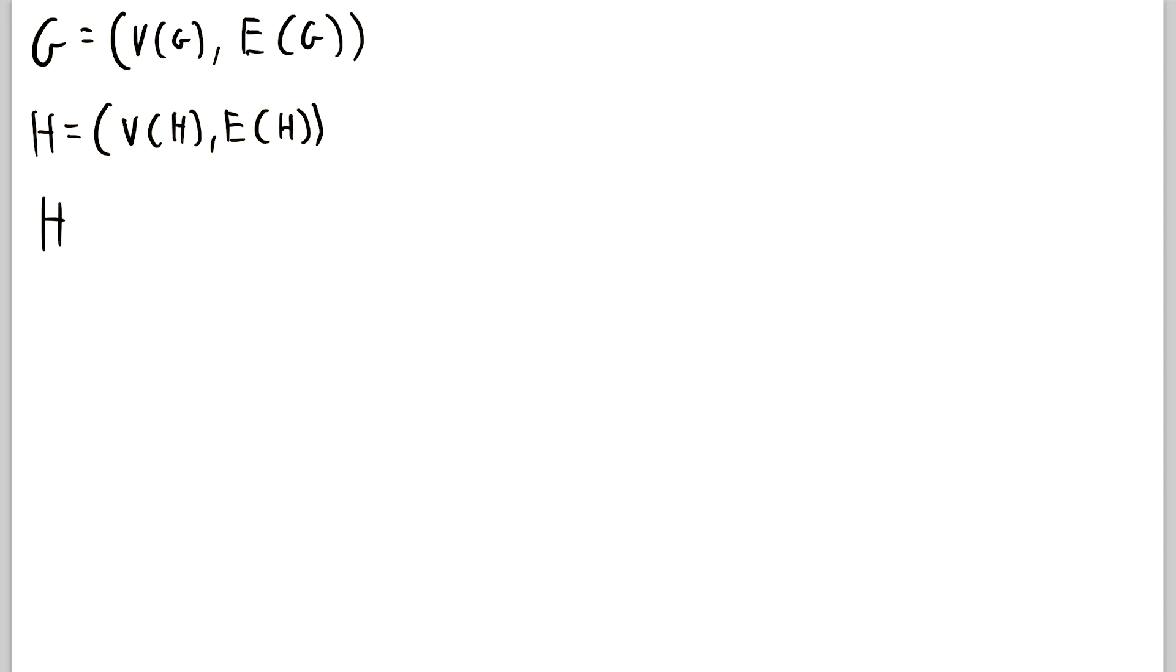Then H is a subgraph of G, written like this, using the same notation as we use for subsets. H is a subgraph of G, if and only if, which I'll abbreviate with the if with two Fs. So H is a subgraph of G, if and only if the vertex set of H is a subset of the vertex set of G. And the edge set of H is a subset of the edge set of G.